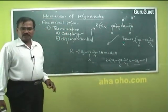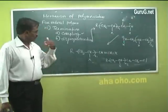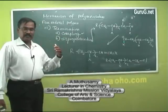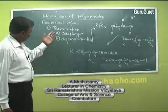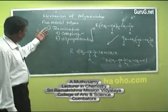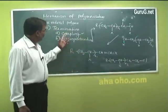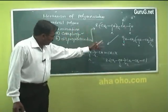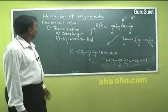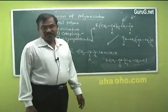So our free radical polymerization takes place through three steps: initiation, propagation, and termination. In the initiation step, free radicals are generated. In the propagation step, the free radicals are utilized to build the polymer chain. In the termination step, the free radical is destroyed by two mechanisms — coupling or disproportionation — and we get the dead polymer. That is all about the mechanism of polymerization through free radical polymerization.